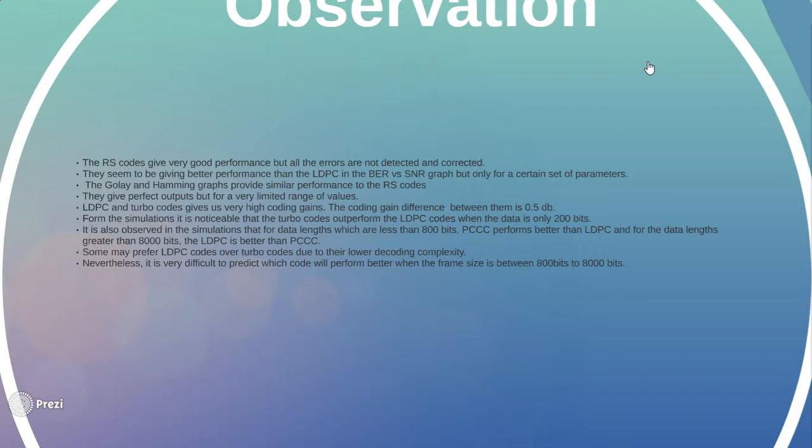The Golay and the Hamming codes provide similar performance to the RS codes. As we saw in our demonstration the Golay codes could not rectify all the errors. They give perfect outputs but for a very limited range of values.